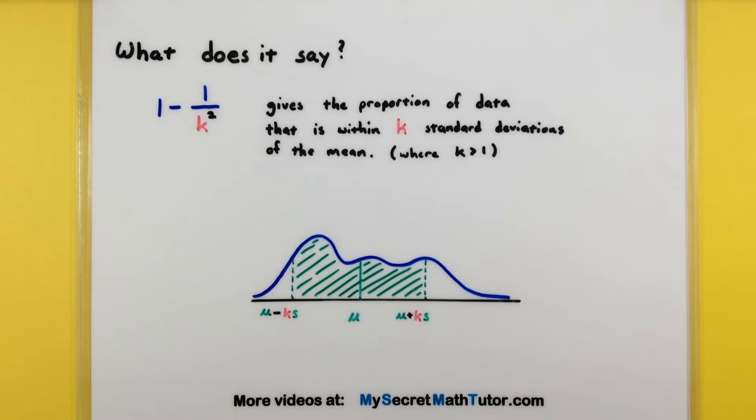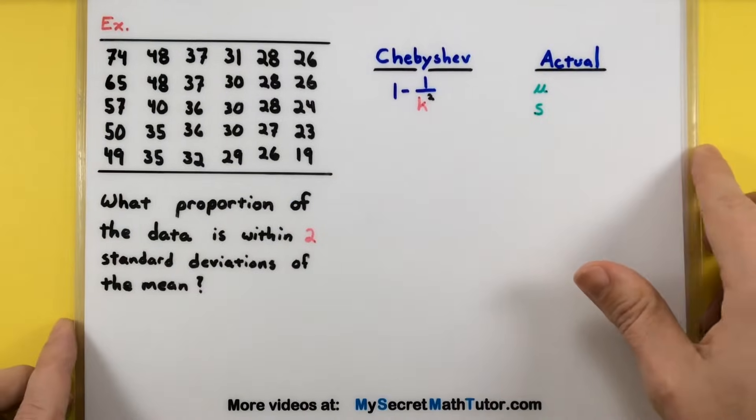Now the interesting part is it gives you a lower number so it actually could be more than what the formula says, but at least it gives you a ballpark answer and says it must be more than this percentage. Let's get into a couple of examples and see how this exactly plays out.